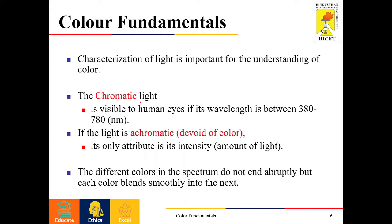The characterization of light is very important for the understanding of color. Chromatic light is visible to human eyes if its wavelength is between 380 nanometers to 780 nanometers, and it gives different color information. If the light is achromatic, it is devoid of color and its only attribute is its intensity — that is, the amount of light. The different colors in the spectrum do not end abruptly, but each color blends smoothly into the next one.